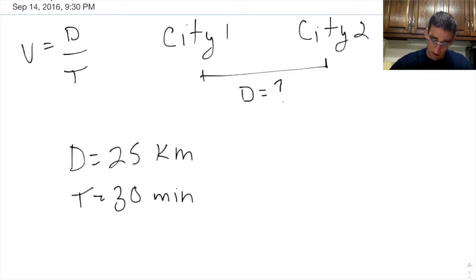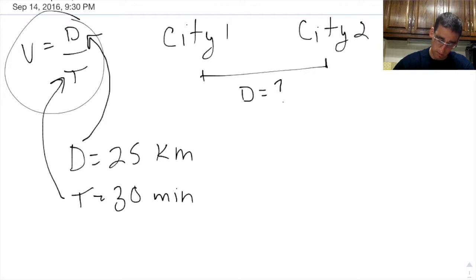So now I've got velocity equals distance over time. I'm going to take this equation and rewrite it, but I'm going to put my 25 in place of distance and my 30 in place of time. So velocity is now going to be 25 divided by 30. Now you can use whatever you need for a calculator.